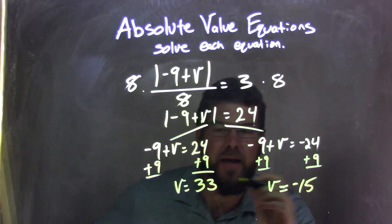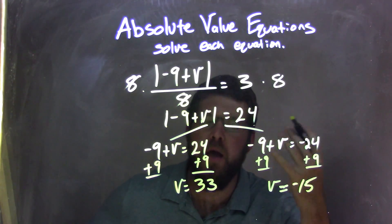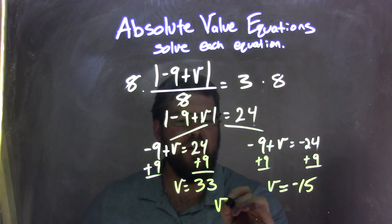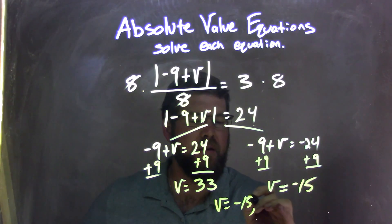From there, we have our final answers of 33 and negative 15. I have to write it nice and neat, so we have V equals negative 15 and positive 33.